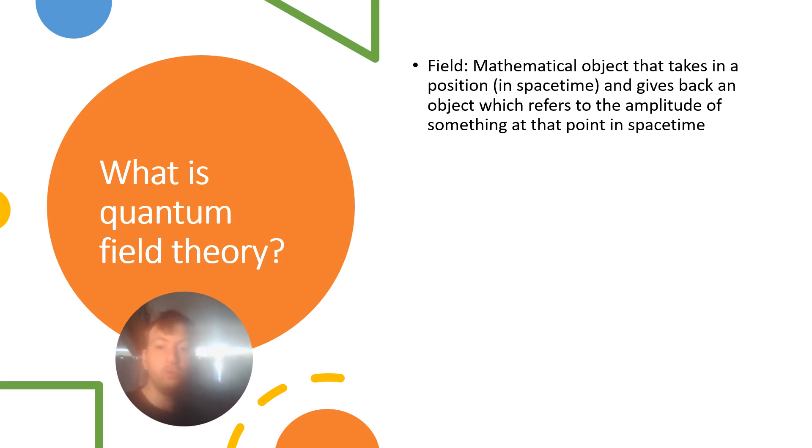And also with quantum field theory, the mathematical object gives you the amplitude of something at a point in spacetime instead of a point in just three-dimensional space. And that's because in quantum field theory we use special relativity, so we're worried about four-dimensional spacetime. And spacetime is four-dimensional because you can think of it like the normal three dimensions described by x, y and z, but we add to that time, so we get four dimensions. And we do this because time and space are quite interrelated, as we'll see in a bit.